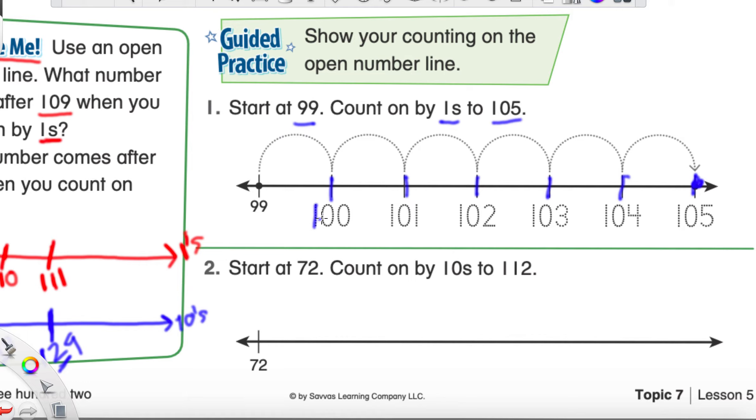And, this is where they stopped right there. And, then they numbered them. 100. 101. 102. 103. 104. And, 105.